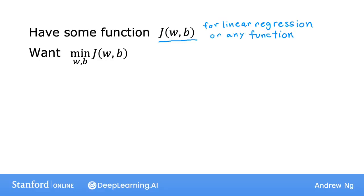Just to make this discussion on gradient descent more general, it turns out that gradient descent applies to more general functions, including other cost functions that work with models that have more than two parameters. For instance, if you have a cost function J as a function of w1, w2, up to wn and b.